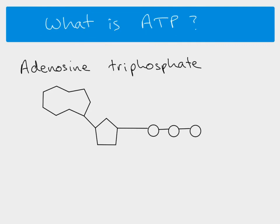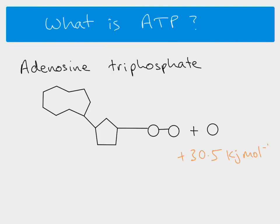Because the bonds are unstable, they can be broken quite easily — they have a low activation energy — which means it's very easy for the body to utilize ATP. When this bond is broken, we end up with ADP (now only two phosphate groups) and a separate inorganic phosphate. When that happens, a lot of energy is released: 30.5 kilojoules per mole of energy is released when the third phosphate is removed from ATP to give ADP. That release of energy is what the body uses to do work.